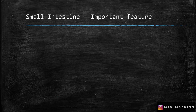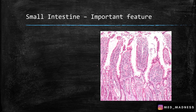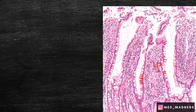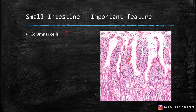The final layer is the serosa or adventitia. Now let's see important general features of the small intestine. This is the small intestine — you can see the epithelium and the lamina propria. The type of epithelial cell present in the epithelium is columnar cells. Let me zoom this image for you so you can see the columnar cells here.